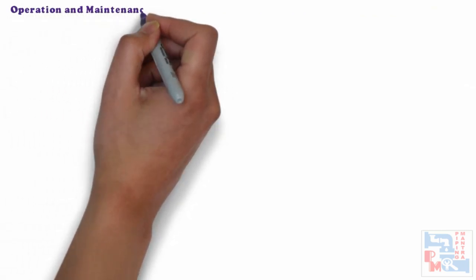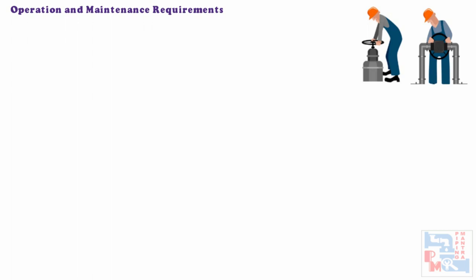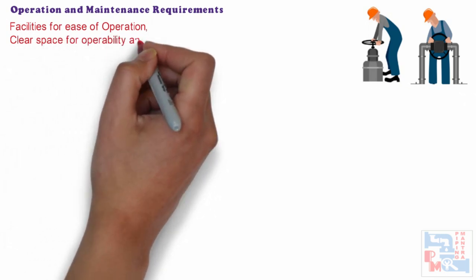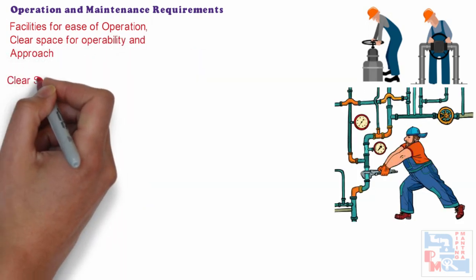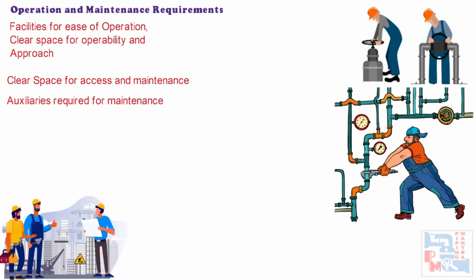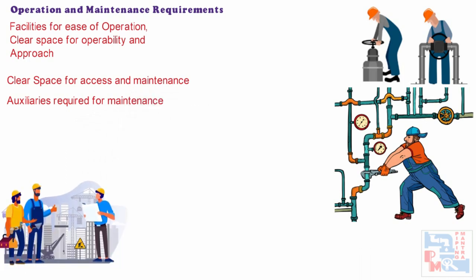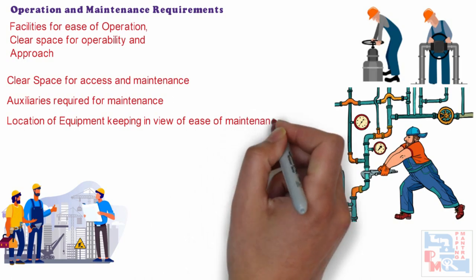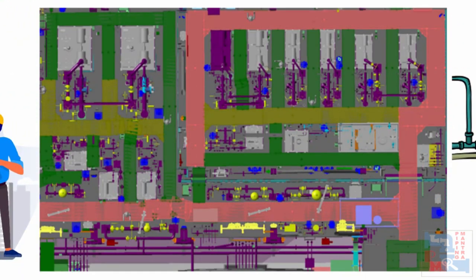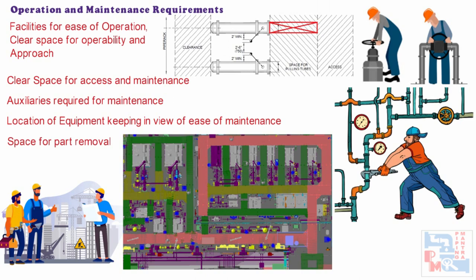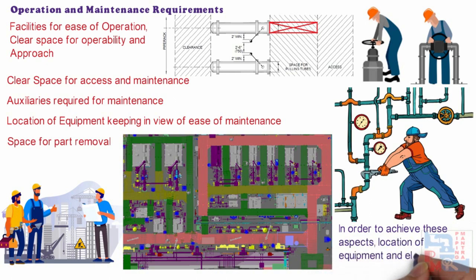Let's see about the operation and maintenance requirements. We have to include all the facilities by which we have ease in operation, like valve access. We should have clear space for operability and approach, and also clear space for access and maintenance. Auxiliaries required for maintenance — i.e. crane, davit, platforms, and ladders — should be considered. While fixing the location of equipment such as pumps, compressors, and centrifugal filters, elevation should be kept in such a way that it can be maintained in an upright position. Space for part removal — i.e. tube bundle of heat exchanger, piston removal of reciprocating pumps, etc. — must be allocated. In order to achieve these aspects, we might need to change the location and elevation of the equipment.